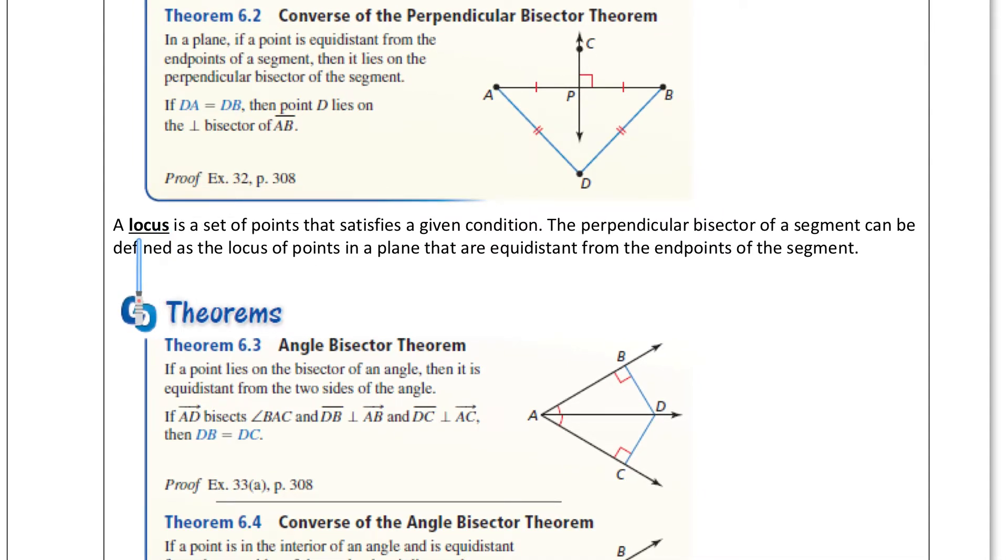Now we have this new word, which is called a locus, and that just means a set of points. If I say locus, I'm just saying a set of all the points that satisfy a condition. So the perpendicular bisector of a segment can be defined as the locus of points in a plane that are equidistant from the endpoints of a segment.